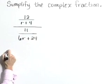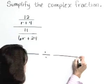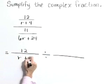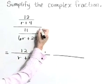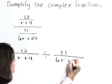We can rewrite this in quotient form as the numerator, 12 over r plus 4, divided by this denominator, 11 over 6r plus 24.